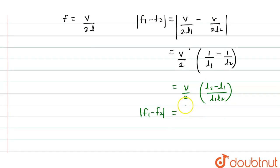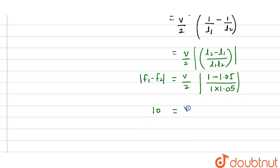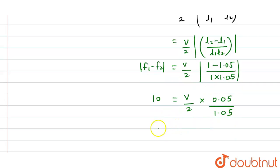Mod of f1 minus f2 will be equal to v divided by 2 into v divided by 1.05, v divided by 1 into 1.05. We have to take mod of this equation. So f1 minus f2 is 10 and it is equal to v divided by 2 into 0.05 divided by 1.05.